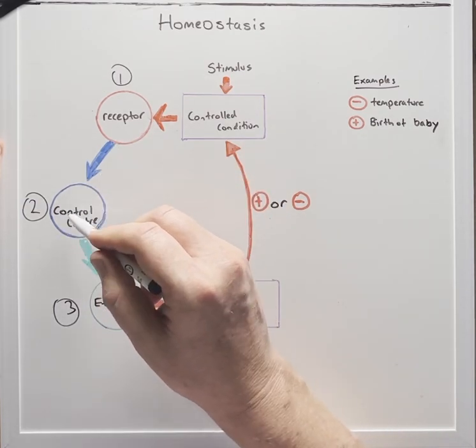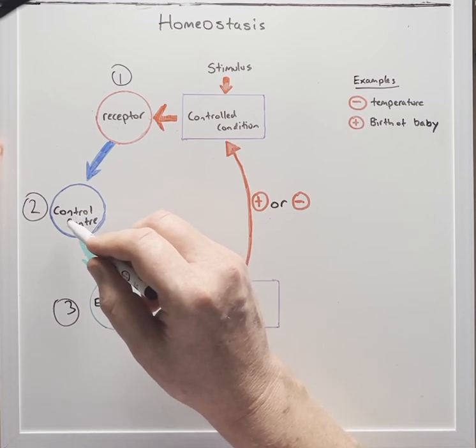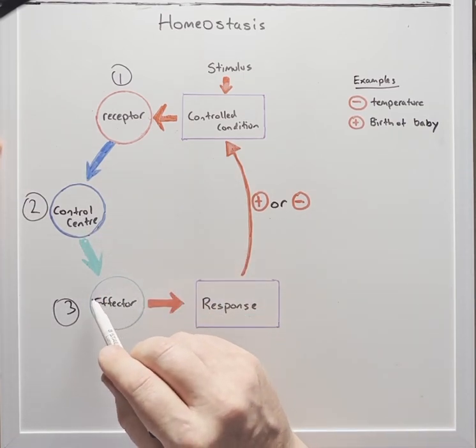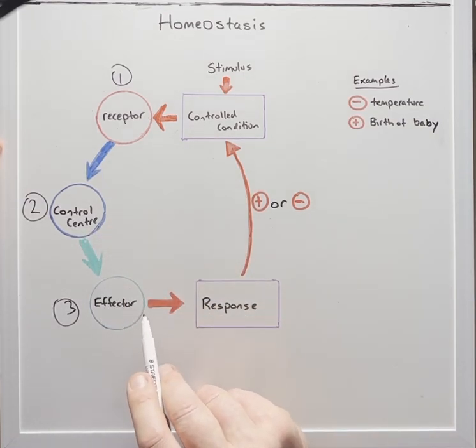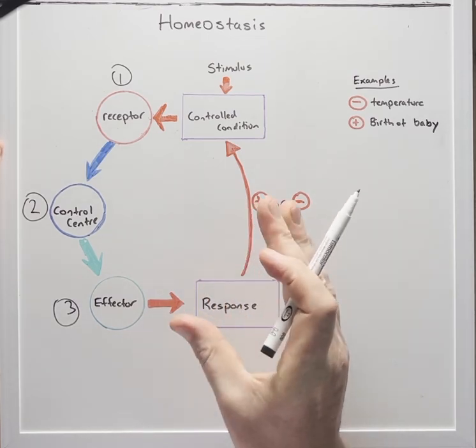The hypothalamus makes sense of that and sends a hormonal signal, oxytocin, to the effector which is the uterus. The response here is to contract the uterus.